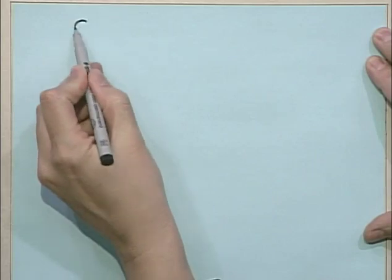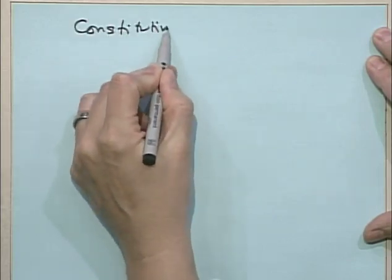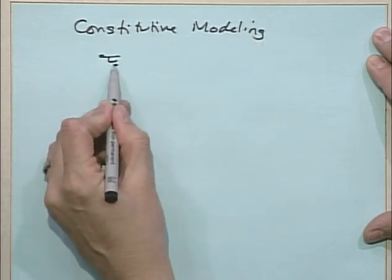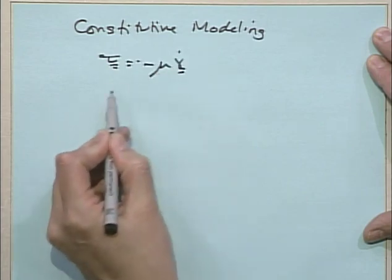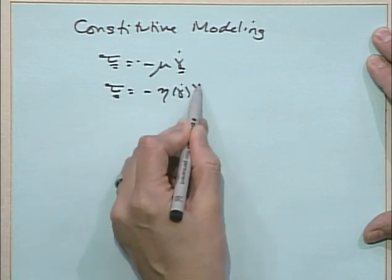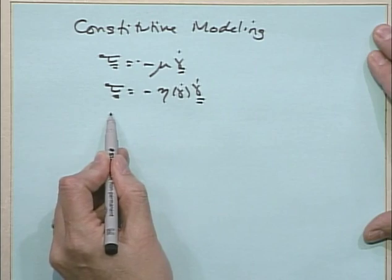Let's see if we can remember where we are. We're talking about the very tail end of our discussion on generalized linear viscoelastic fluids. The thread of the class has been constitutive modeling. We did Newtonian, we did generalized Newtonian, and now we've done generalized linear viscoelastic.